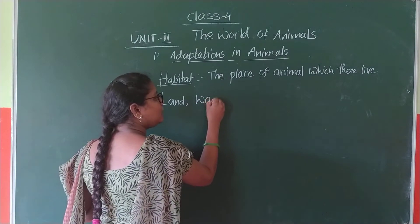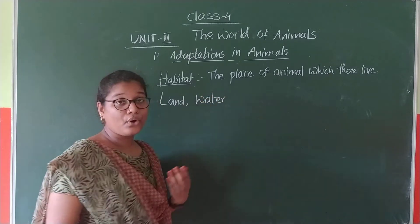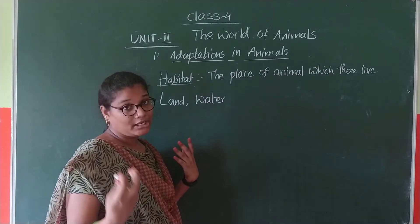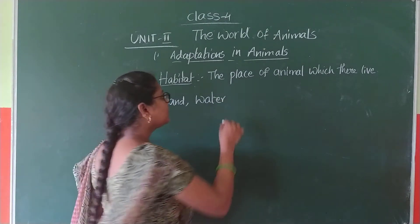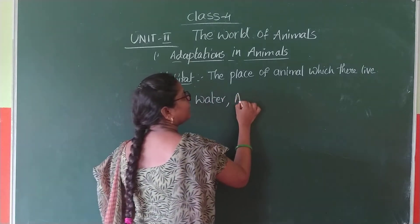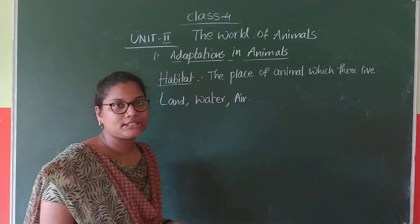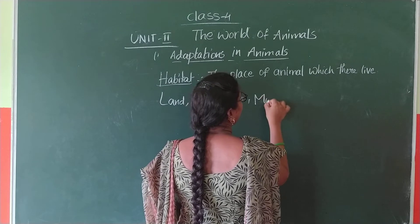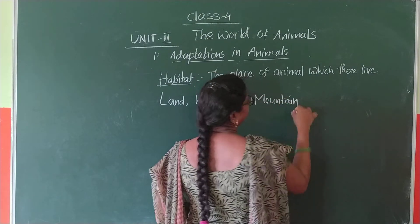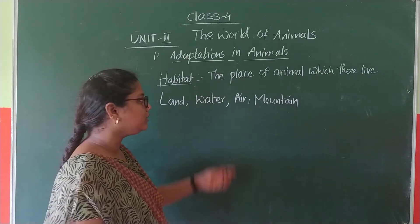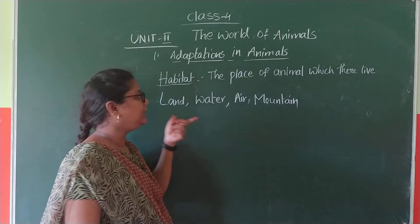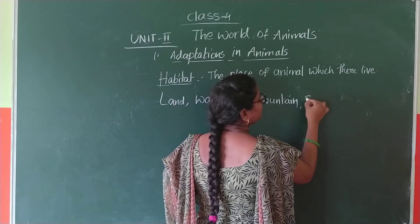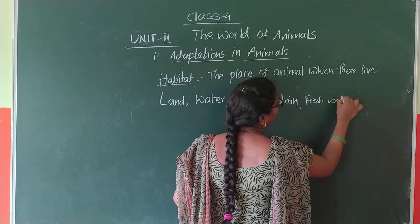Some animals live in water, like fish and frog. Frog lives in both water and land. Some animals like jellyfish and snakes also live in water. Some animals live in the air, like birds — crow, parrot. Some animals live in mountains. So: land is one habitat, water is one habitat, air is one habitat, mountain is one habitat, and fresh water is also one habitat.